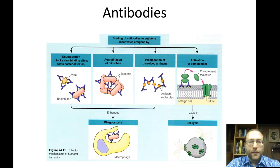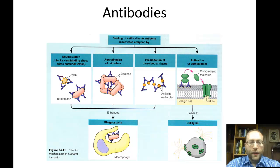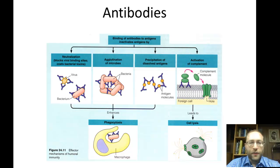Agglutination: antibodies are shaped like Ys, and the ends of the Ys stick to the antigens. Since there are two ends, one can stick to the antigen of one pathogen and the other to another pathogen, causing them all to clump together. Precipitation is similar — in this case with a toxin dissolved in bodily fluids; when the antibodies bring everything together, the toxin precipitates out from dissolved to solid. The result of all three is that it makes it easier for macrophages to come in and eat them, including the pathogen or antigen. Antibodies can also tell foreign cells to explode, or lyse.